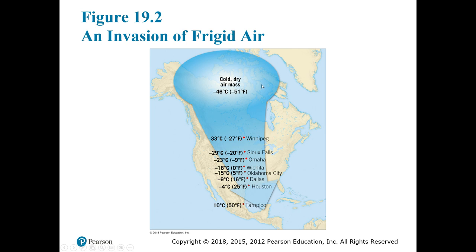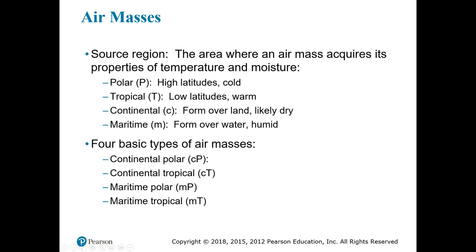Air masses can move and do move from their source region into another area. The source region is where an air mass acquires its characteristics. If it's very cold, we consider it polar, designated P; T for tropical, which are low-latitude warm areas — remember low latitude, zero being the equator. Continental, lowercase c, versus maritime, lowercase m, indicates how much moisture is expected. Air masses that formed over a continent get the designation c, and over ocean, m. We put these letters together to give us our four basic types of air masses.